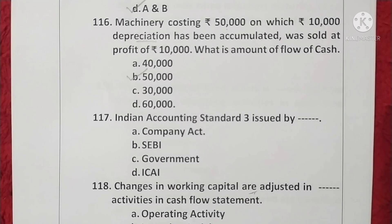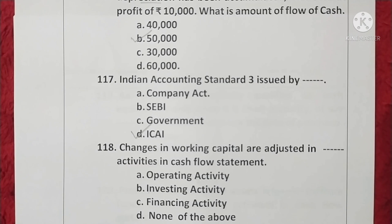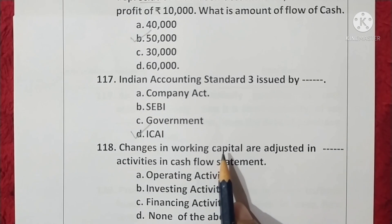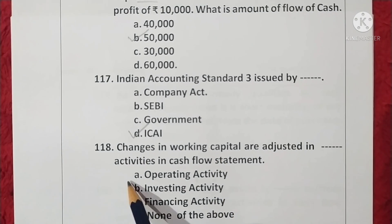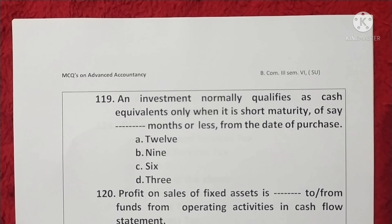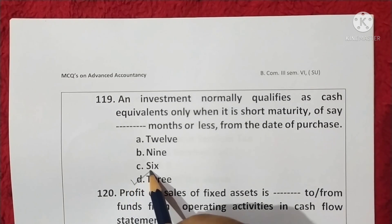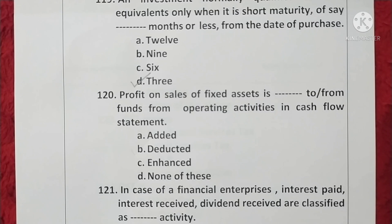Question 117. Indian Accounting Standard 3 is issued by ICAI — the Institute of Chartered Accountants of India. Option D is correct. Question 118. Changes in working capital are adjusted in operating activities in the cash flow statement. Option A is correct. Question 119. An investment qualifies as cash equivalent only when it has a short maturity of three months or less from the date of purchase. Option D is correct. Question 120. Profit on sale of fixed assets is deducted from funds from operating activities in a cash flow statement. Option B is correct.